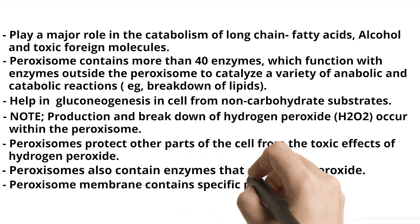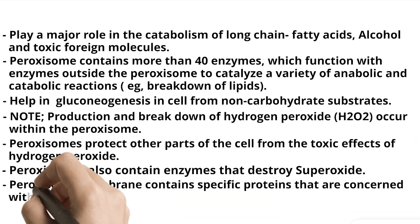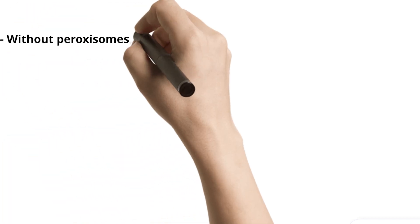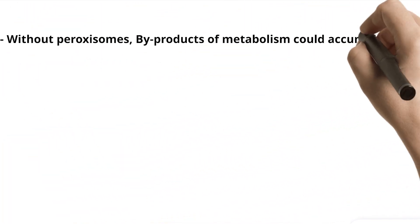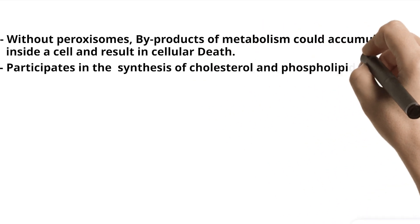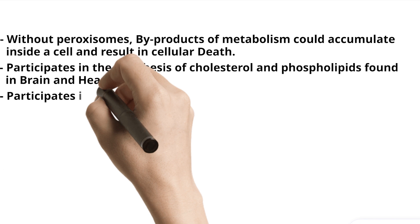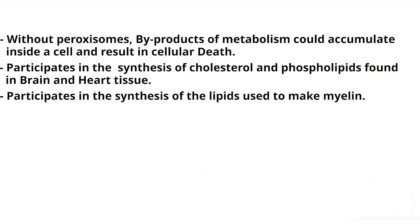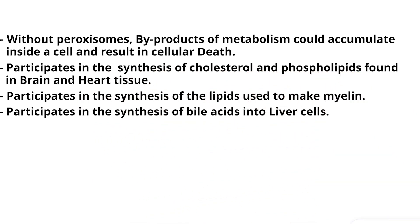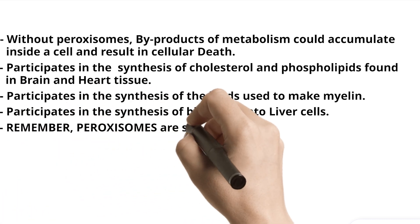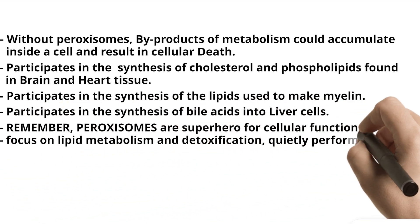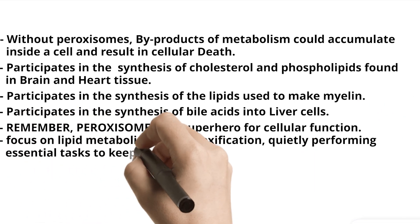Peroxisomes also contain enzymes that destroy superoxide. The peroxisome membrane contains specific proteins concerned with transport of substances into and out of the peroxisome. Without peroxisomes, byproducts of metabolism could accumulate inside a cell and result in cellular death. Peroxisomes participate in the synthesis of cholesterol and phospholipids found in brain and heart tissue, the synthesis of lipids used to make myelin, and the synthesis of bile acids in liver cells. Remember: peroxisomes are superheroes for cellular function — focused on lipid metabolism and detoxification, quietly performing essential tasks to keep the cell healthy and balanced.